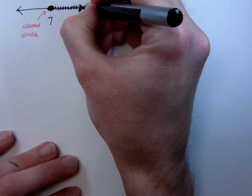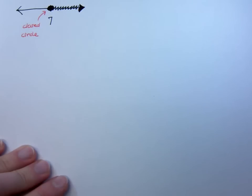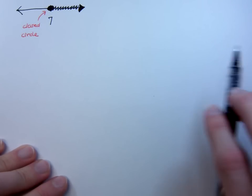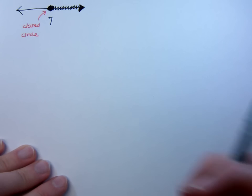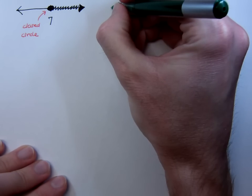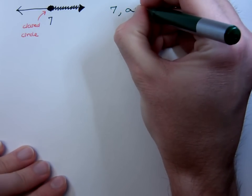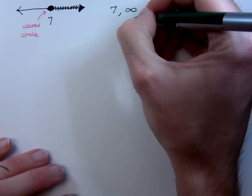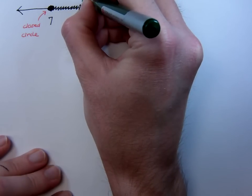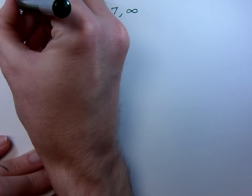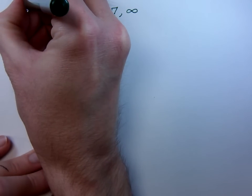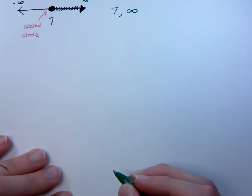Now if I were to shade out here to the right, just like I had in the last example. Shading out to the right means that I'm starting from 7 and I'm going out to the right, so I go towards positive infinity. Going out to the right is positive infinity. If you go all the way out to the left, we denote that with negative infinity.